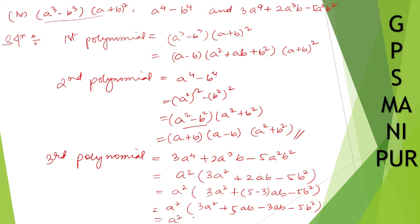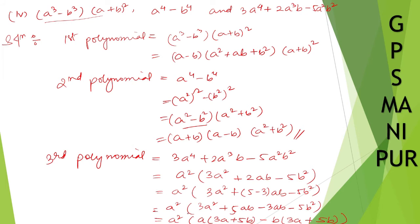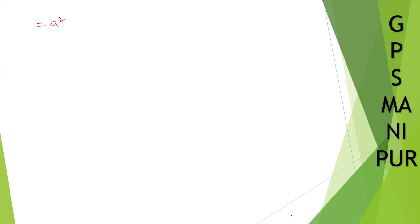From the first two terms take 'a' common: a(3a plus 5b). From the last two terms take 'b' common: b(minus 3a plus... wait, minus sign goes out) giving plus 5b. So we can arrange this as a square times (a minus b) times (3a plus 5b).